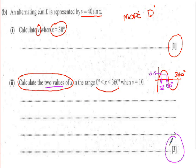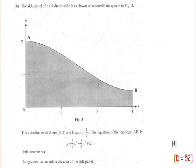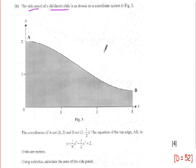If you get everything right up to this stage, you can actually walk away with a distinction — 52 marks out of 60 is typically distinction level. The next question shows a side panel of a children's slide, giving some context. Don't let the context bother you; it could be in any setting. This is an integration question.